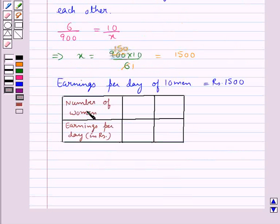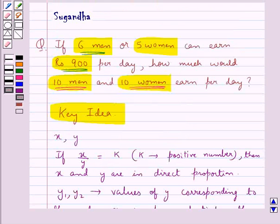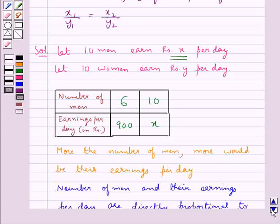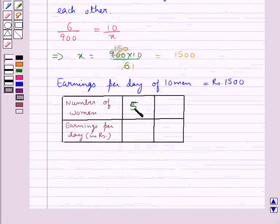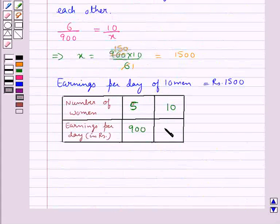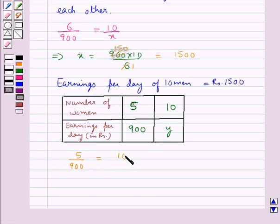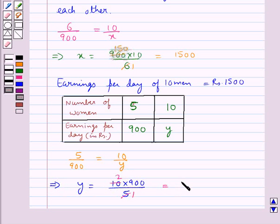Now consider a table with number of women and earnings per day. In the question we have that 5 women earn Rs. 900 per day. So when we have 5 women their earnings per day is Rs. 900, and when we have 10 women we have assumed their earnings to be Y. In the same way, the number of women and earnings per day are also in direct proportion. So we have 5 upon 900 is equal to 10 upon Y, and this gives us Y is equal to 10 into 900 upon 5, which equals 1800.